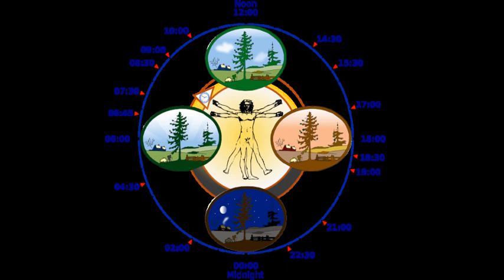Crepuscular, which describes animals primarily active during the dawn and dusk hours, such as white-tailed deer and some bats.